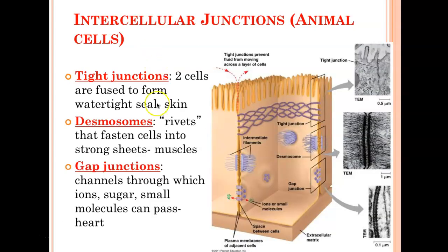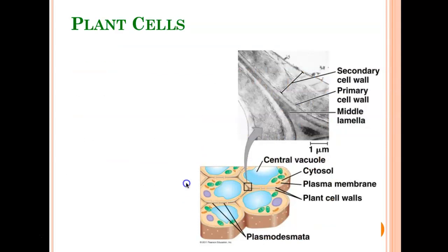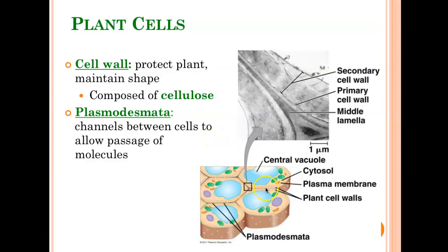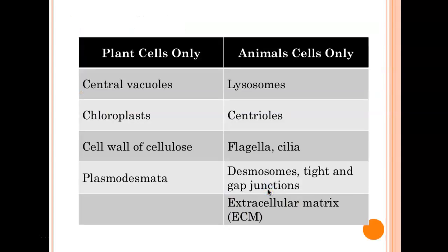Animal junctions: tight junctions — two cells are fused to form a watertight seal, like in skin cells. Desmosomes — a type of junction that forms rivets so that cells can fasten together to form sheets; found in muscles. Gap junctions are channels — they have a hole, so always look at the picture to see the difference. The type of junction in plants is called plasmodesmata. It's like a gap junction — it's actually a hole between cells, like a little hallway through the cell wall, so ions and other molecules can get from one cell to another.